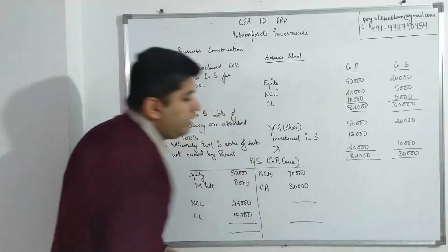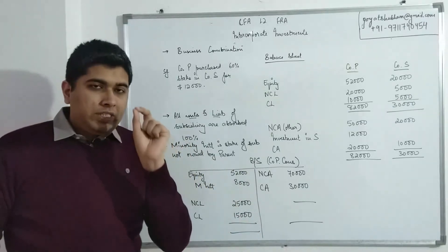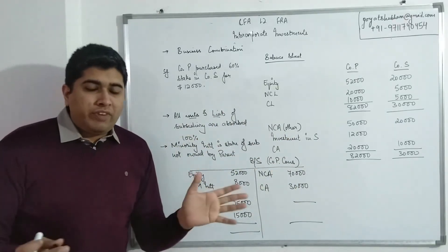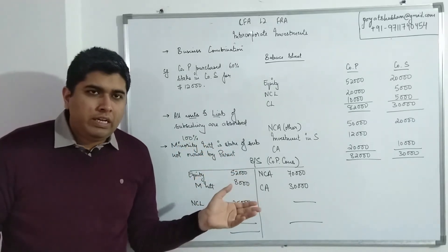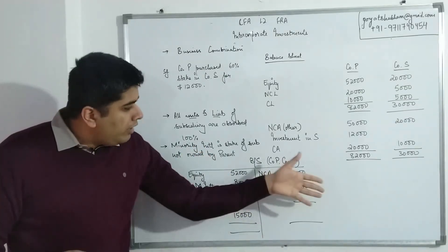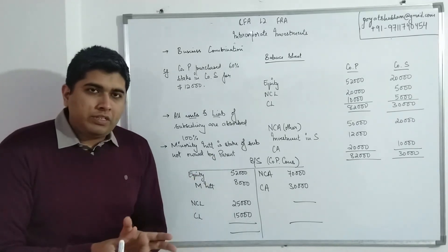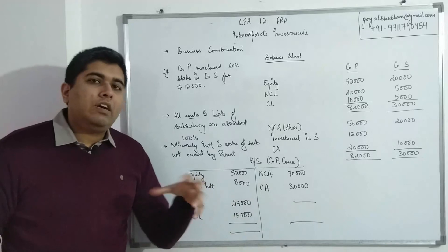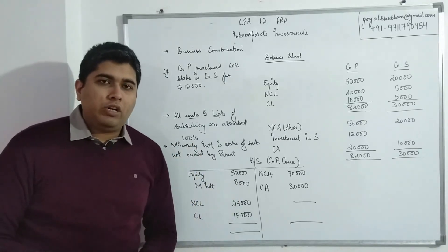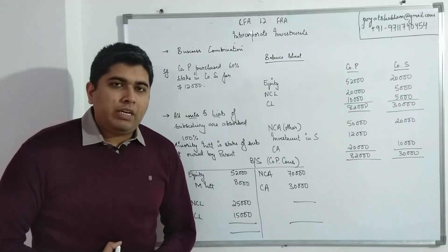With minority interest of $8,000 added, the consolidated balance sheet balances on both sides. The acquisition method absorbs 100% of assets and liabilities, then uses minority interest to represent the portion of the subsidiary not owned by the parent. This reflects operational control — the parent controls all assets — while acknowledging partial ownership. On the same logic, adjustments are also made to the income statement, which we will look at next.